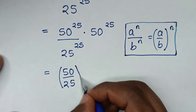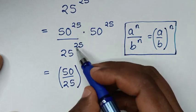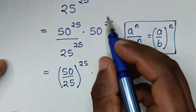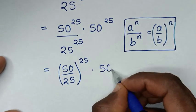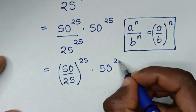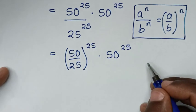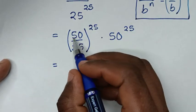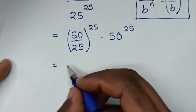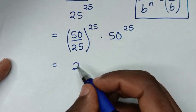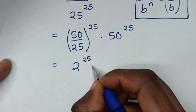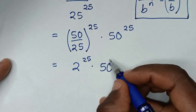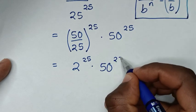Then times this exponent, which is 50 to the power of 25. So it will be equal to 50 divided by 25 is 2, to the power of 25, then times 50 to the power of 25.